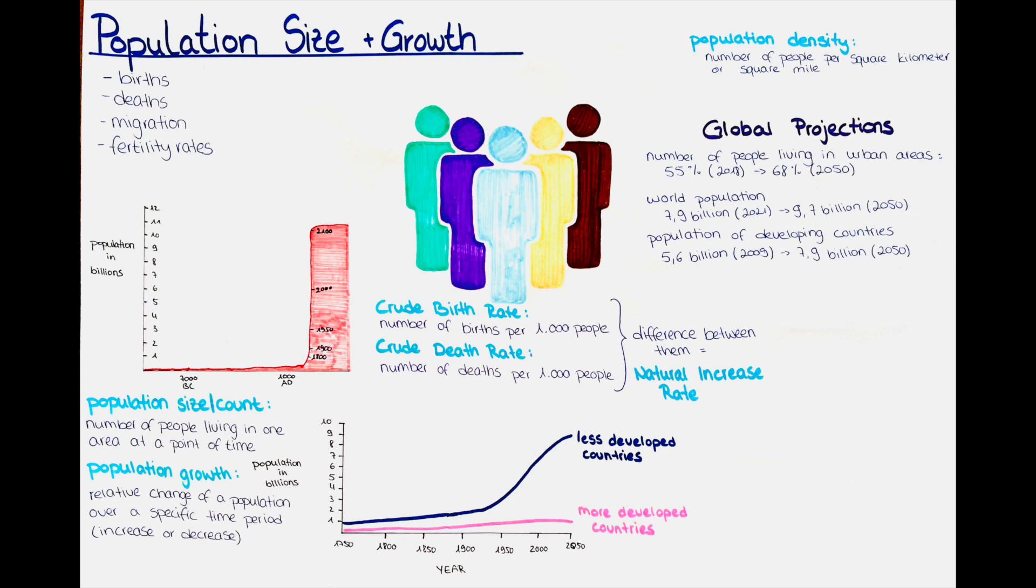Since then, the speed of population growth has been decelerating, which is thought to be largely due to falling fertility rates and increasing maternal age for the first baby. How will the world population growth continue in the future?